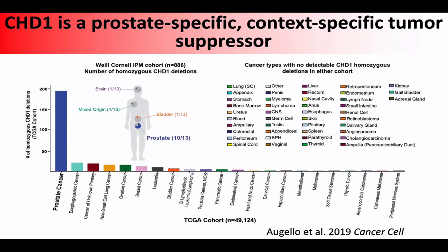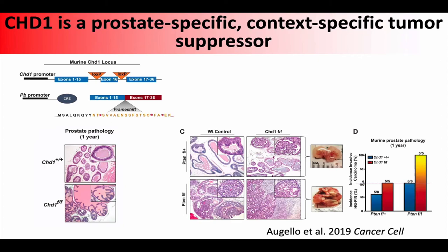This is a prostate-specific tumor suppressor that happens primarily in these SPOP mutant tumors. We developed a genetically engineered mouse model where we specifically deleted the CHD1 locus in a Cre-inducible manner in the prostate. By itself it does very little — like most single hits in the mouse prostate — but combined with other things like PTEN deletions, we can amplify neoplastic phenotypes, confirming it looks like a prostate-specific tumor suppressor.